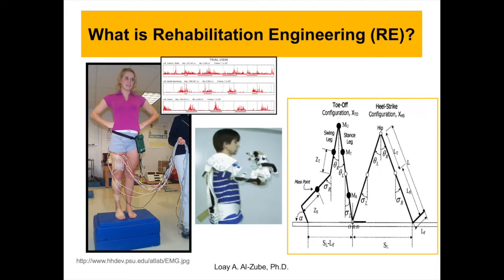One more thing about rehabilitation engineering is data analytics. People have EMG readings from subjects, and our job is to do analytics — that's where programming comes in. Robotics is also part of rehabilitation engineering and assistive technology. Recalling from biomechanics, we discussed initial and final configurations, the boundary method, inverse dynamics, and forward dynamics — we're going to talk about them today.